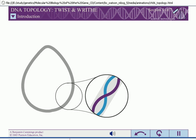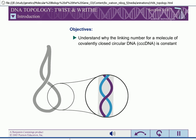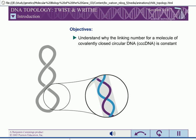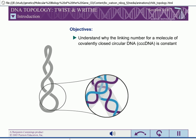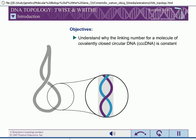DNA topology describes the coiling of a molecule of DNA. When you have completed this exercise, you should understand why the linking number for a molecule of covalently closed circular DNA, or CCC DNA, is constant.